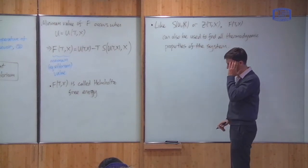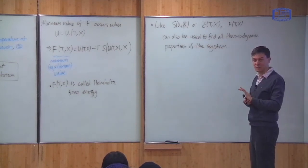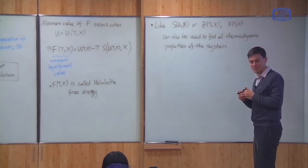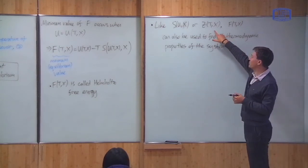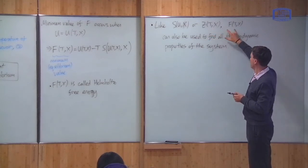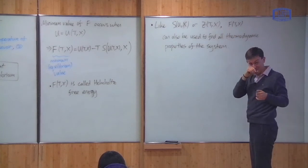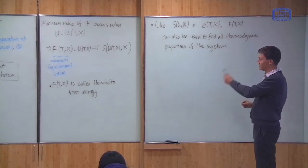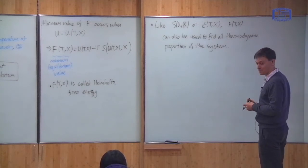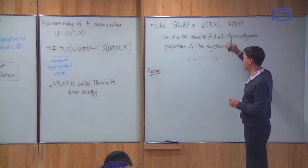This is why it's important. If we can calculate this function, then we can work out everything about the system. It turns out there's a very close relationship between the canonical partition function and the Helmholtz free energy in the thermodynamic limit — a very simple relationship between the two. So let's see the relationship between these two things.